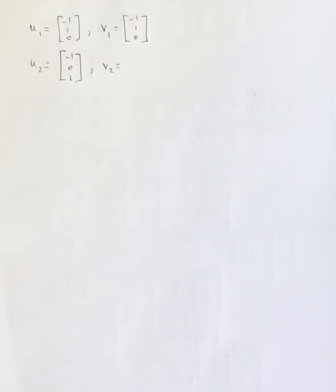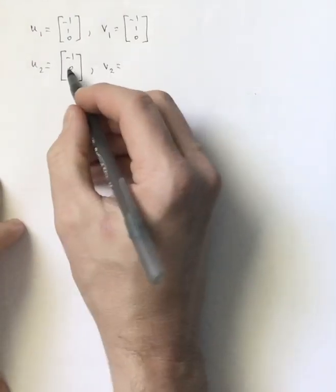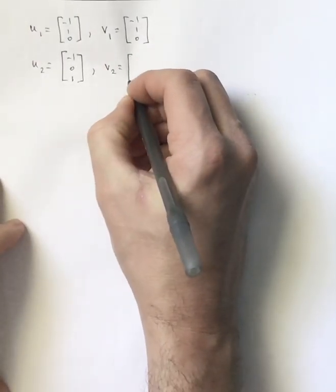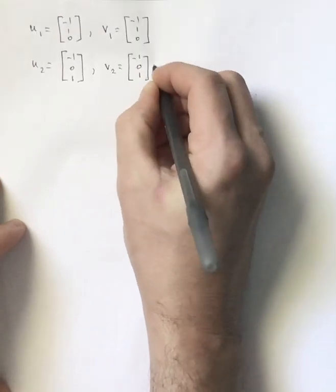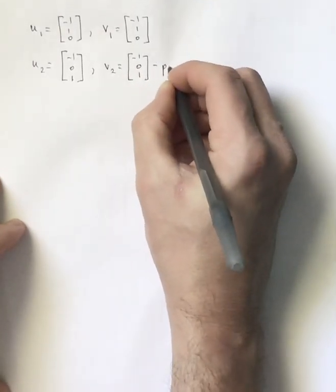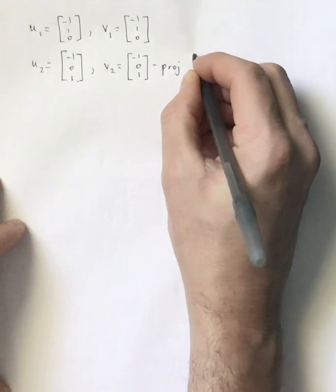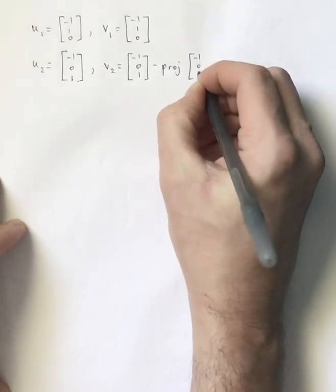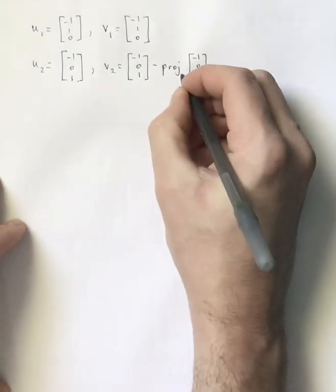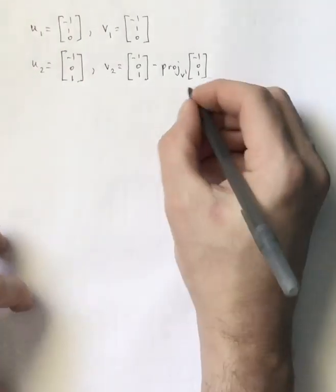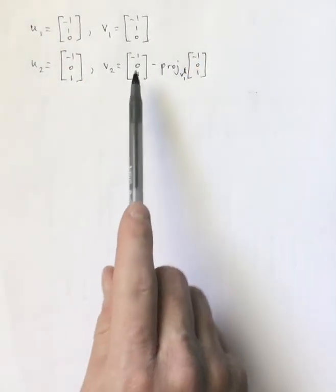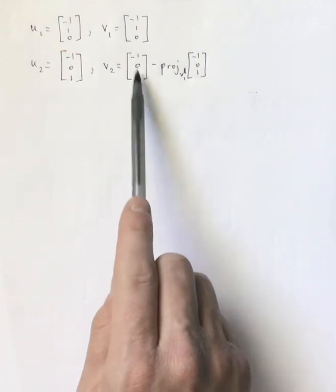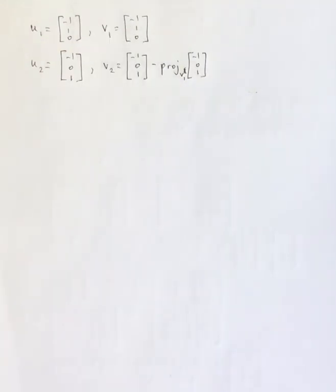So V2, to find V2, we're actually going to start with U2. But we are going to subtract the projection of U2 onto V1. So I actually want to project this vector onto that vector.